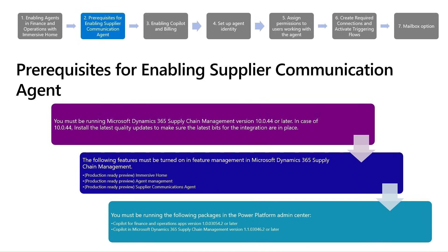On the Power Platform side, it is crucial to have the correct supporting packages installed: Copilot for Finance and Operations apps and Copilot in Microsoft Dynamics 365 Supply Chain Management. Make sure to have the latest package installed. Meeting these prerequisites ensures a seamless and fully functional co-pilot experience in your supply chain environment.